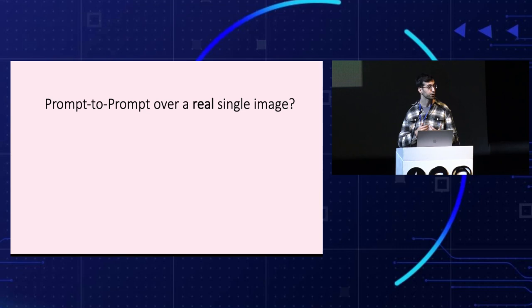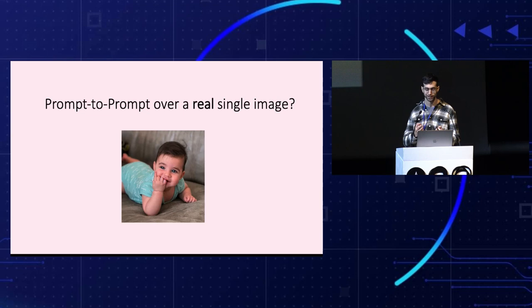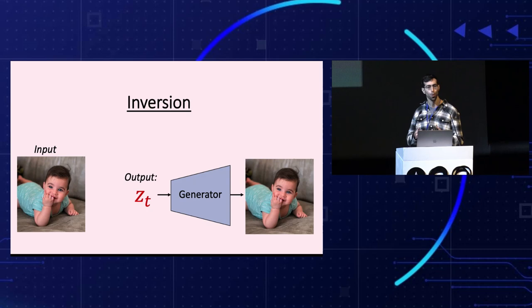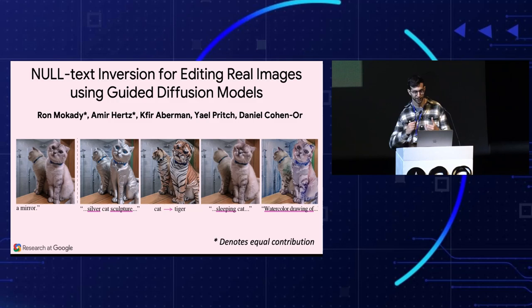This is very cool, but all these examples were generated. How can we edit real images, which do not just show up with attention maps? This requires a process called inversion. Given an input image, we need to find a noise vector which can reproduce the input image when fed to the generator. For this purpose, we designed a new inversion scheme for diffusion models called null text inversion. It consists of two components, the first being pivotal inversion for diffusion.